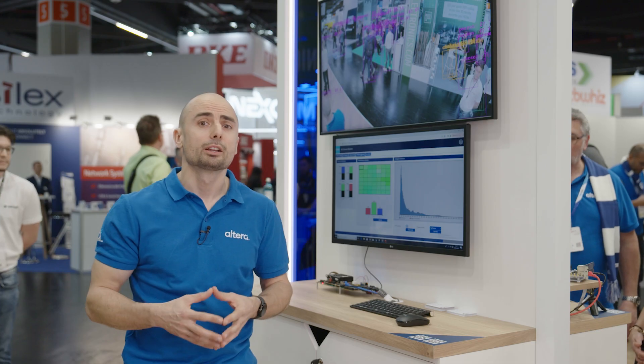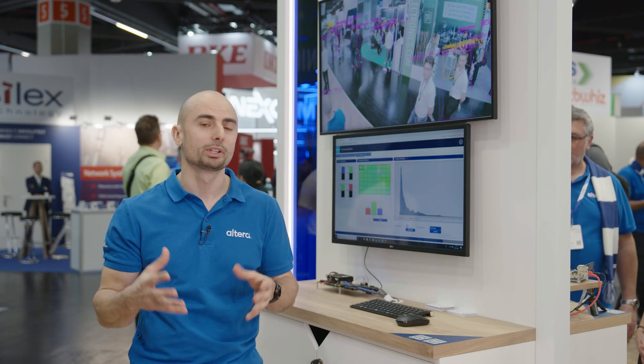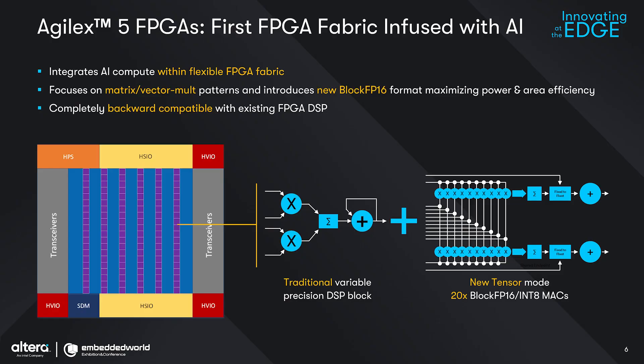Finally, the inference-per-second performance is underpinned by the Agile X5 AI-infused DSP architecture, which enables you to run many fixed-point and floating-point operations in one clock cycle.